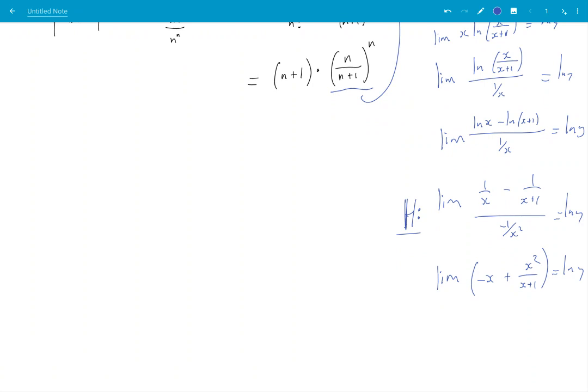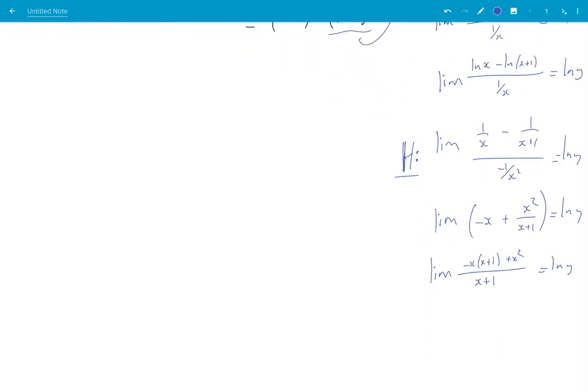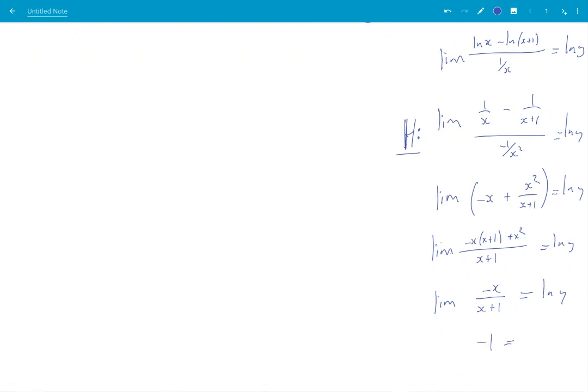Well, I guess I have to do a common denominator, don't I? Okay, this is getting tedious, but what do I get? Limit minus x over x plus 1 is ln y. And then I get minus 1 is ln y. So y is equal to e to the minus 1. Okay. That's my limit.